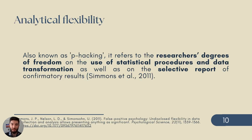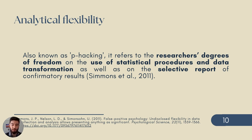Analytical flexibility, also known as p-hacking, refers to the researcher's degrees of freedom on the use of statistical procedures and data transformation, as well as on the selective reporting of results. Consequently, research outcomes may be misleading due to the possible presence of Type I or Type II errors — the false positives and false negatives, respectively.